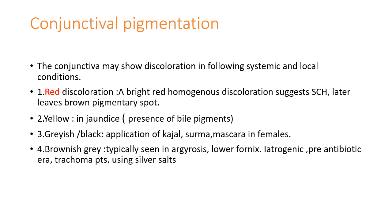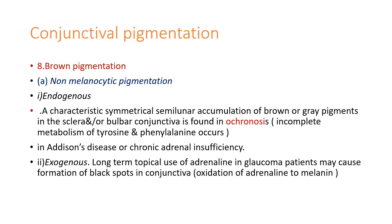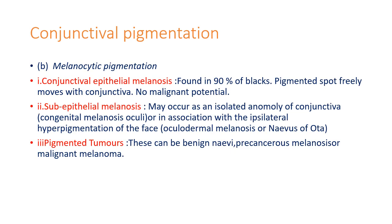Brown pigmentation can be seen as non-melanocytic pigmentation, which can be endogenous — a characteristic symmetrical semilunar accumulation of brown or gray pigments in the sclera found in ochronosis (incomplete metabolism of tyrosine and phenylalanine), Addison's disease, or chronic adrenal insufficiency. Exogenous causes include long-term topical use of adrenalin in glaucoma patients, causing formation of black spots in the conjunctiva due to oxidation of adrenalin to melanin.